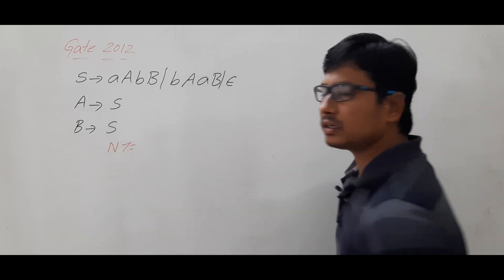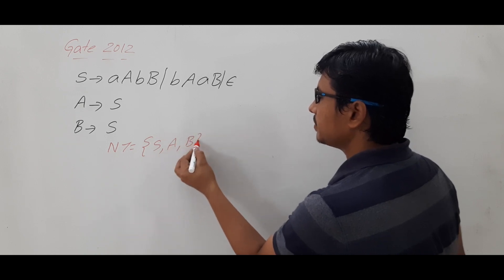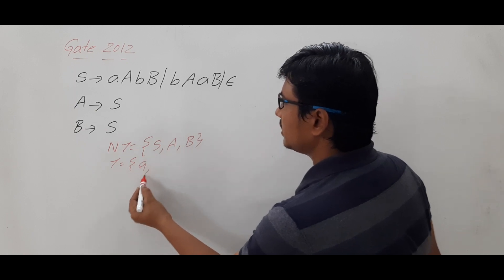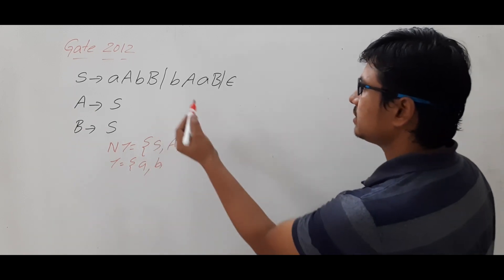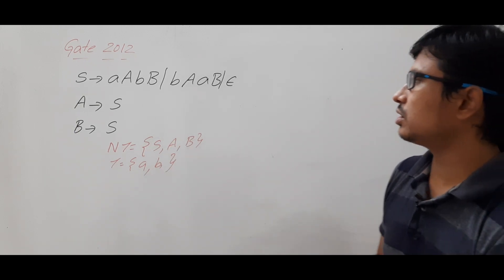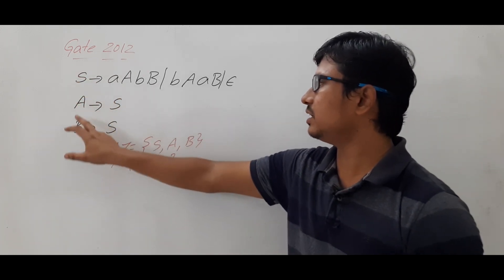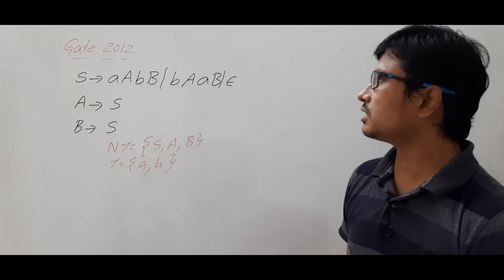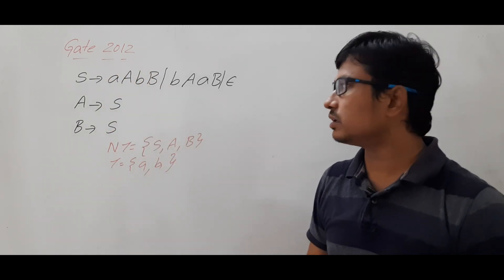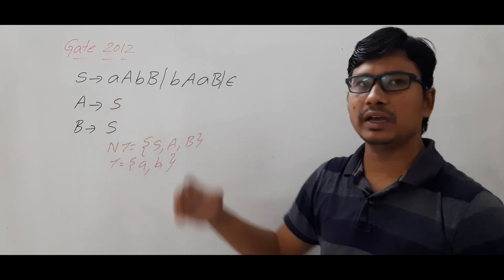First we need to identify what are the non-terminals in the grammar. The non-terminals are S, A, and B. The terminals are small 'a', small 'b', and epsilon — even if you do not consider epsilon, it is not a problem. The non-terminals are the symbols on the left-hand side, and the terminals are the symbols on the right-hand side other than the non-terminals, such as small 'a' and small 'b'.